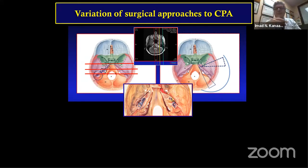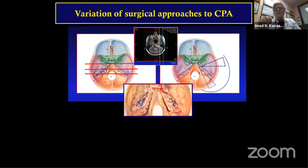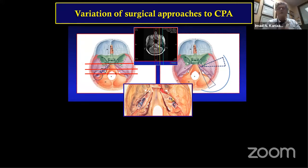Regarding endoscopy: using the endoscope as a hybrid with the microscope gives you an extended reach along the tentorium to go higher without the complex drilling procedures we used in the 1980s and early 1990s.